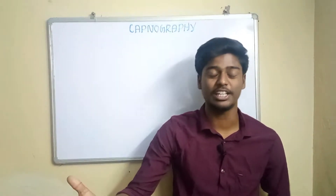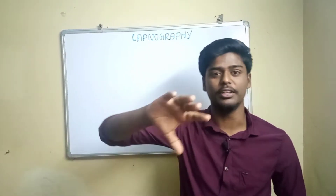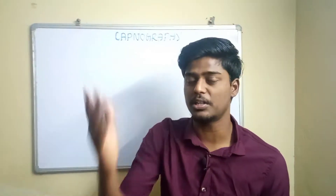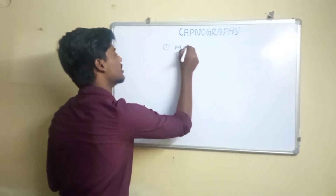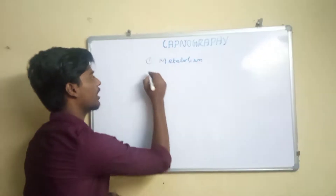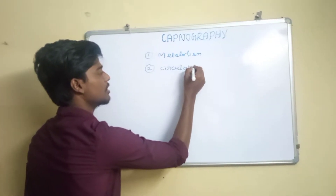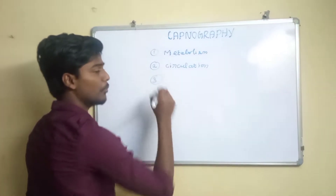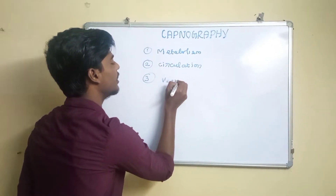The blood will be circulated. In our lungs, we have gas exchange. So carbon dioxide comes and we have to ventilate. Carbon dioxide starts in three processes: metabolism — it will produce CO2 as a by-product; blood circulation — it will carry CO2 to the lungs and alveoli; and the ventilation process, which is the gas exchange.